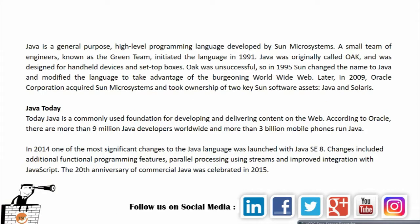Java is a general-purpose, high-level programming language developed by Sun Microsystems. A small team of engineers known as the Green Team initiated the language in 1991. Java was originally called Oak and was designed for handheld devices and set-top boxes, but that was unsuccessful, so in 1995 they changed the name to Java.